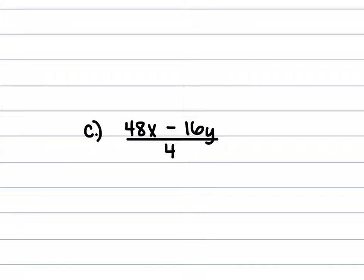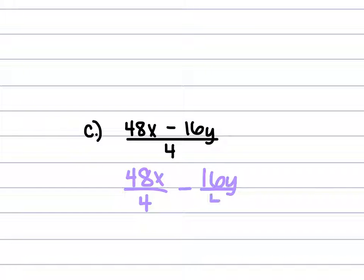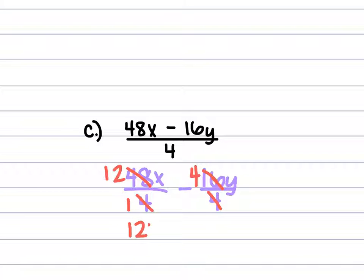For c, we have 48x minus 16y, all over 4. So we're going to divide the 48x by 4 as well as the 16y by 4, and keep the negative in between the two. The 4 goes into 48 twelve times, and the 4 goes into 16 four times. So this is going to be 12x minus 4y.